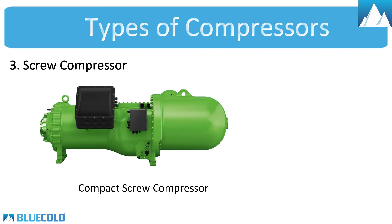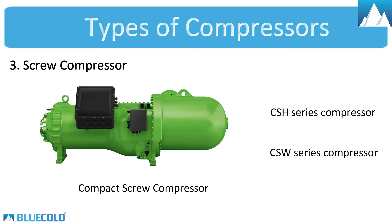Compact Screw Compressor — it's for industrial chiller systems. It has two different types: CSH Series, which can be used with both air-cooled and water-cooled condensers and can deliver temperatures up to minus 20 degrees Celsius; and CSW Series, which is used with a water-cooled condenser only and can deliver temperatures up to minus 10 degrees Celsius.